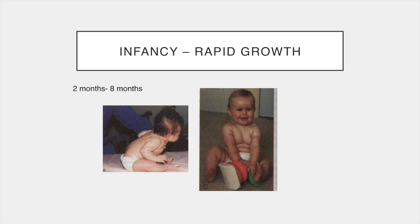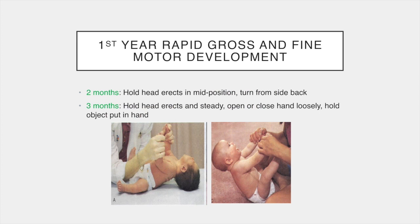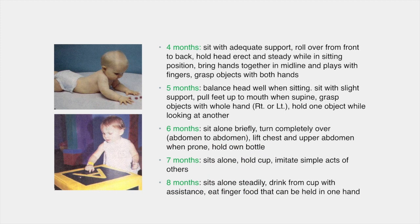The first year of life is a time of rapid growth in muscle tone and the first stages of motor and fine motor coordination. At two months, the infant can hold their head erect and turn their body from side to back. At three months, they can hold their head erect and steady and voluntarily hold an object. At four months, they can sit with adequate support, roll over front to back and bring hands together at mid-line. At five months, they balance their head well when sitting, sit with slight support and grasp objects with their whole hand. At six months, they can sit alone briefly, turn completely over tummy to tummy and hold their own bottle.